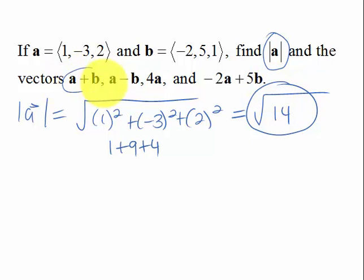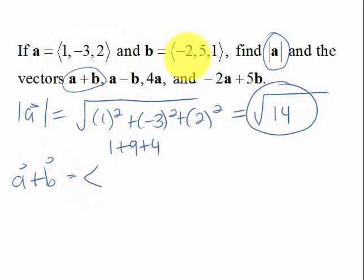Now if we wanted to find A plus B we just add component-wise. So A plus B is going to be the vector 1 minus 2 is minus 1, and adding the middle components negative 3 plus 5 is 2, and 2 plus 1 is 3.